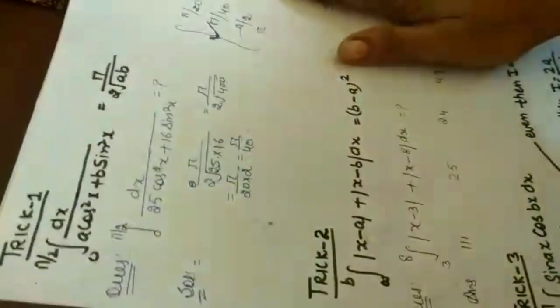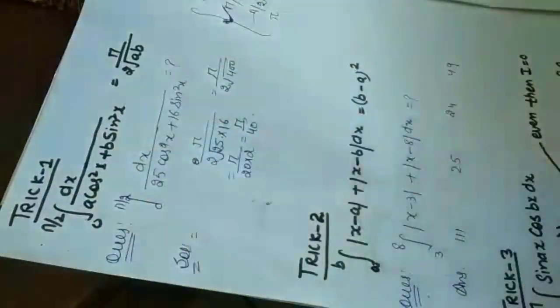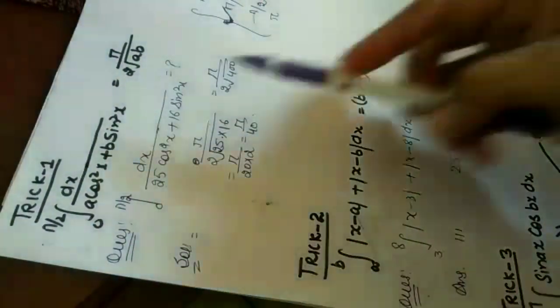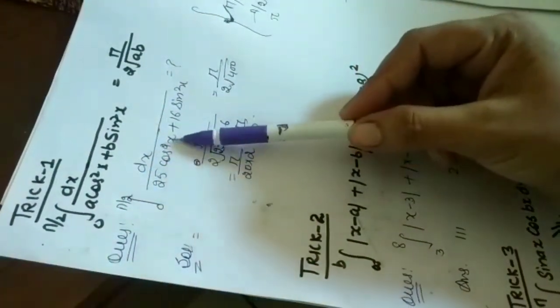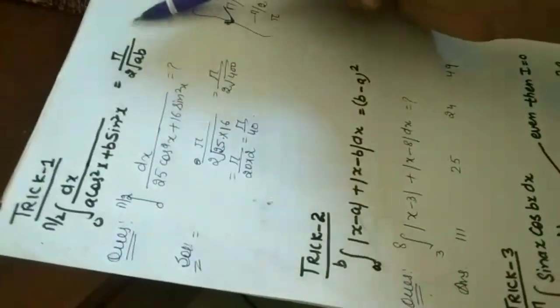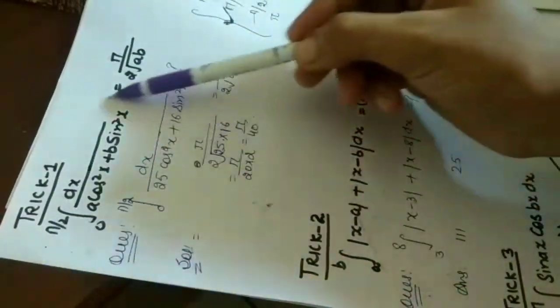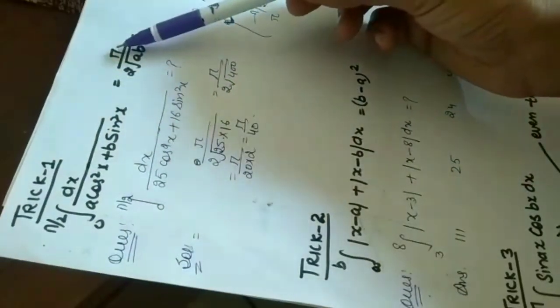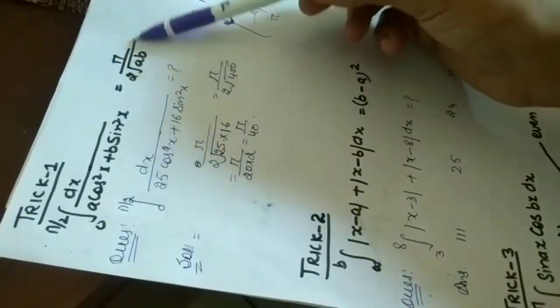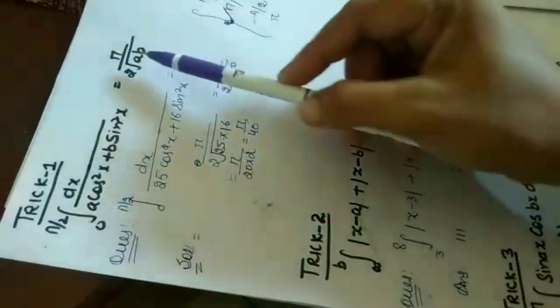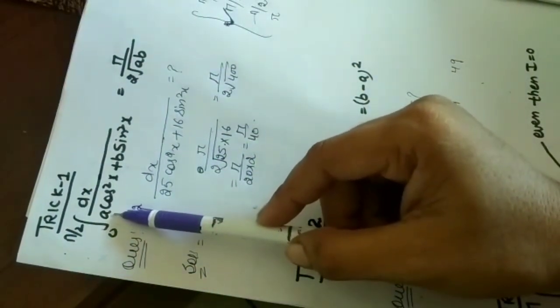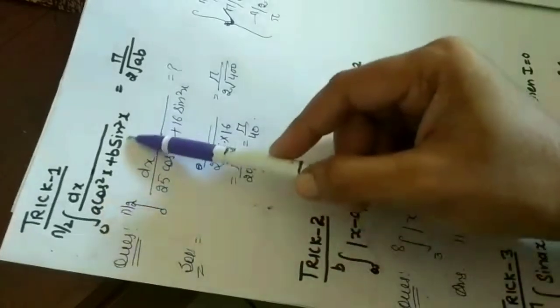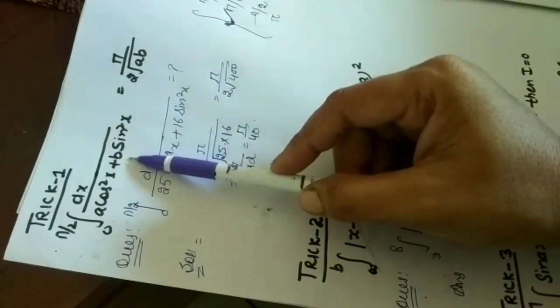Let's take an example. Question is integration from 0 to pi by 2 dx over 25 cos square x plus 16 sin square x. As we have learnt that this function of integration is pi over 2 root ab. The constant with cos is a and with sin is b.